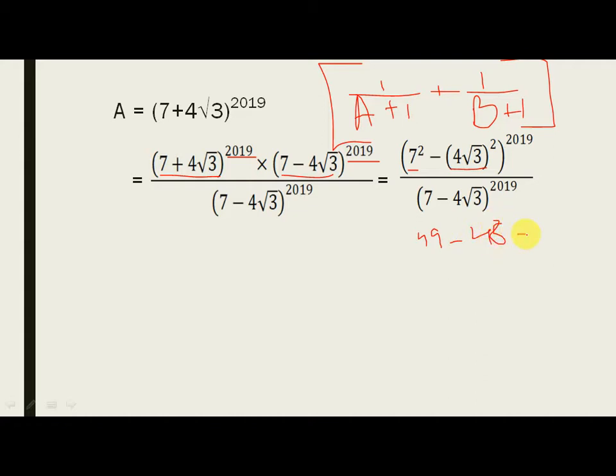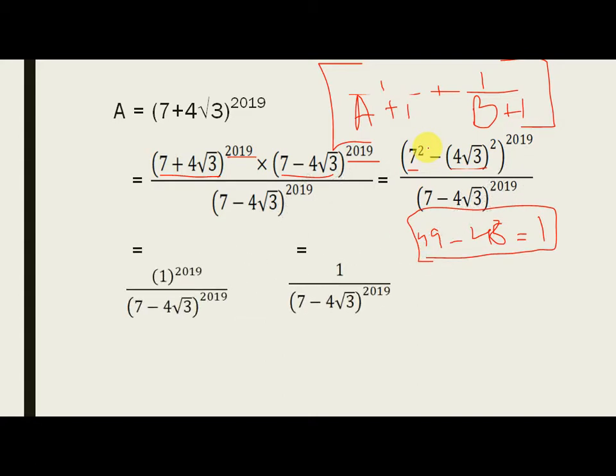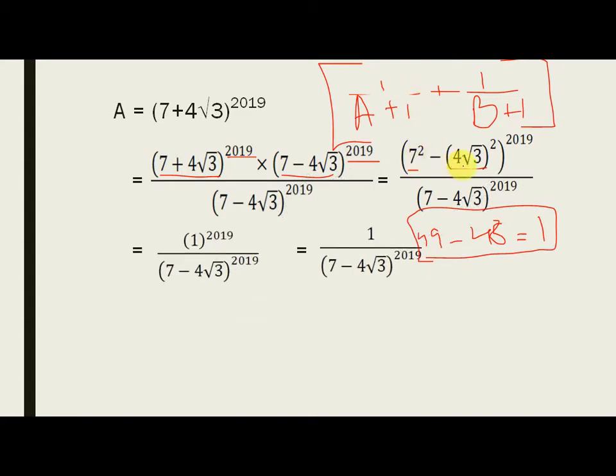Now, can you see how symmetrical is this question? I will tell you. You see 7 square minus 4 root 3 square is 1. So, 1 power 2019 is 1.